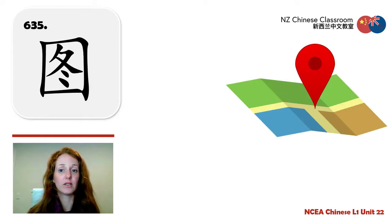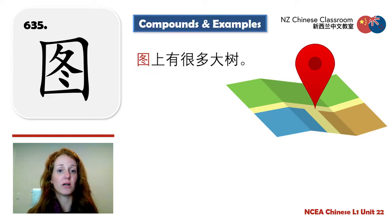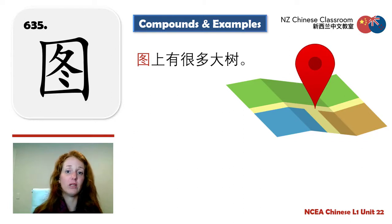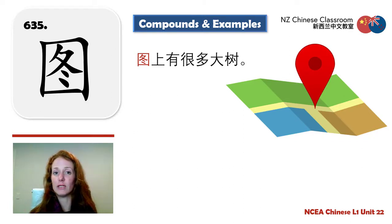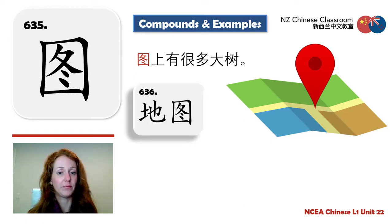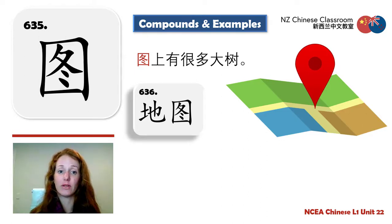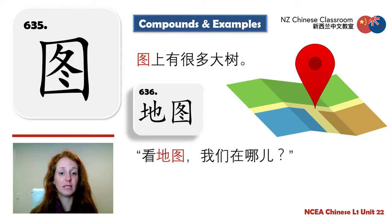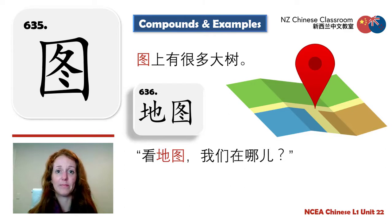图 — this has to do with a picture. Example: 图上有很多大树 — On the picture, there are a lot of big trees. Often we say 图片 — picture or illustration. And 地图 — picture of a place, a map. Remember 地方. Example: 看地图，我们在哪? — Look at the map, where are we? Maybe you're lost with a friend.